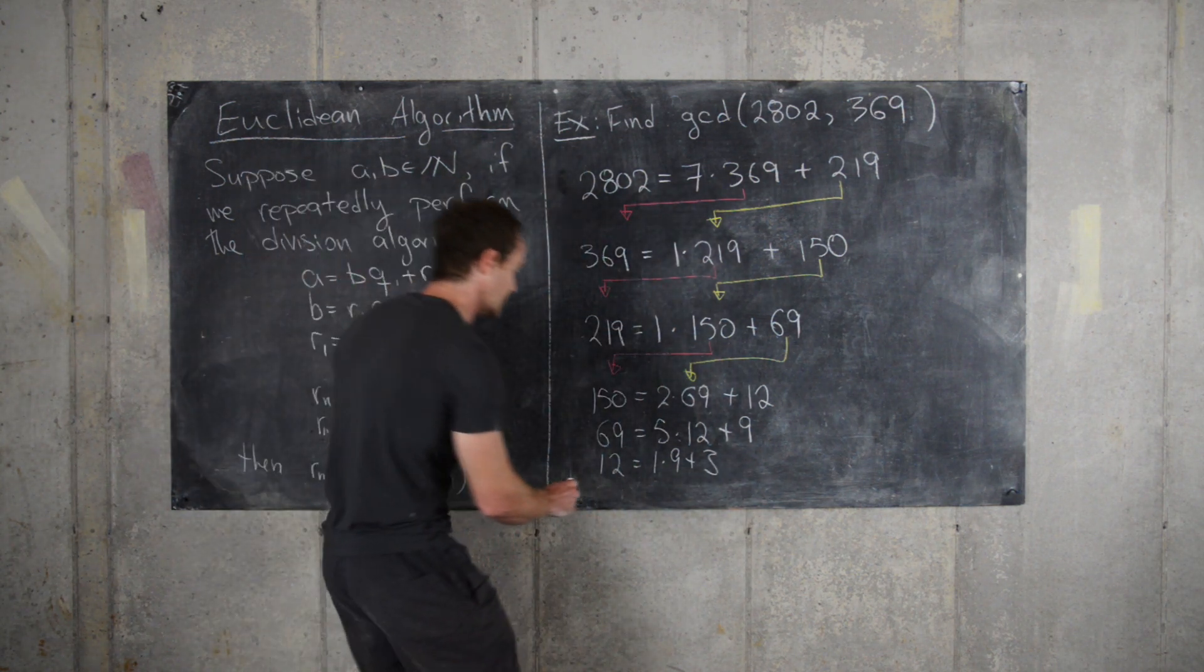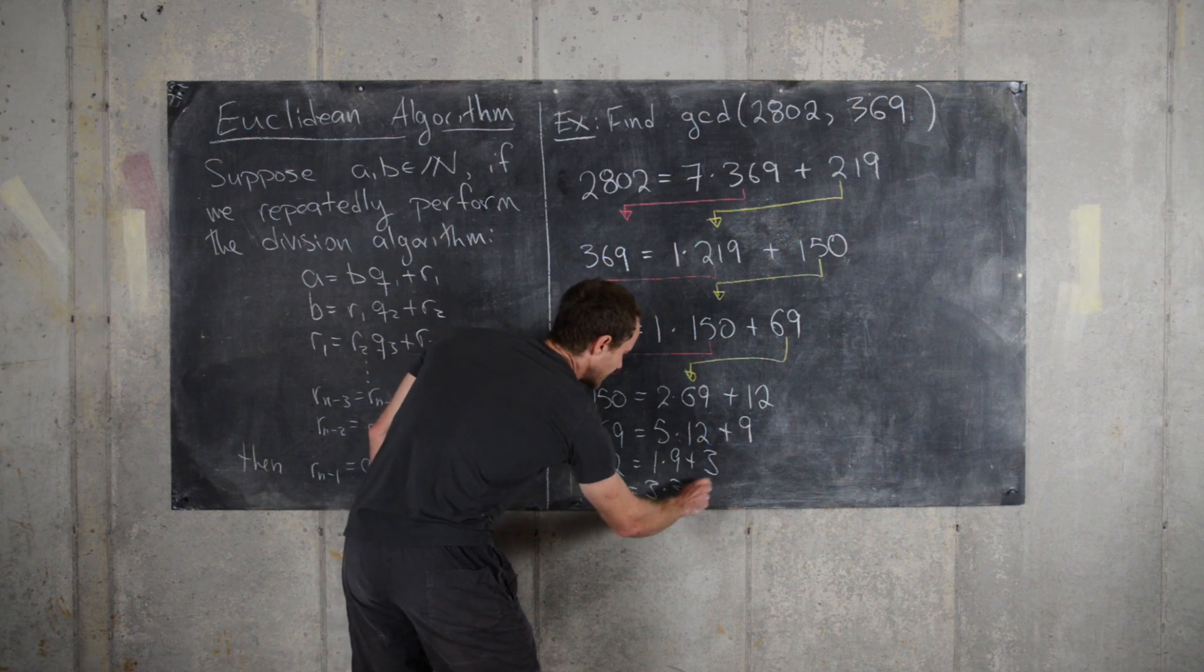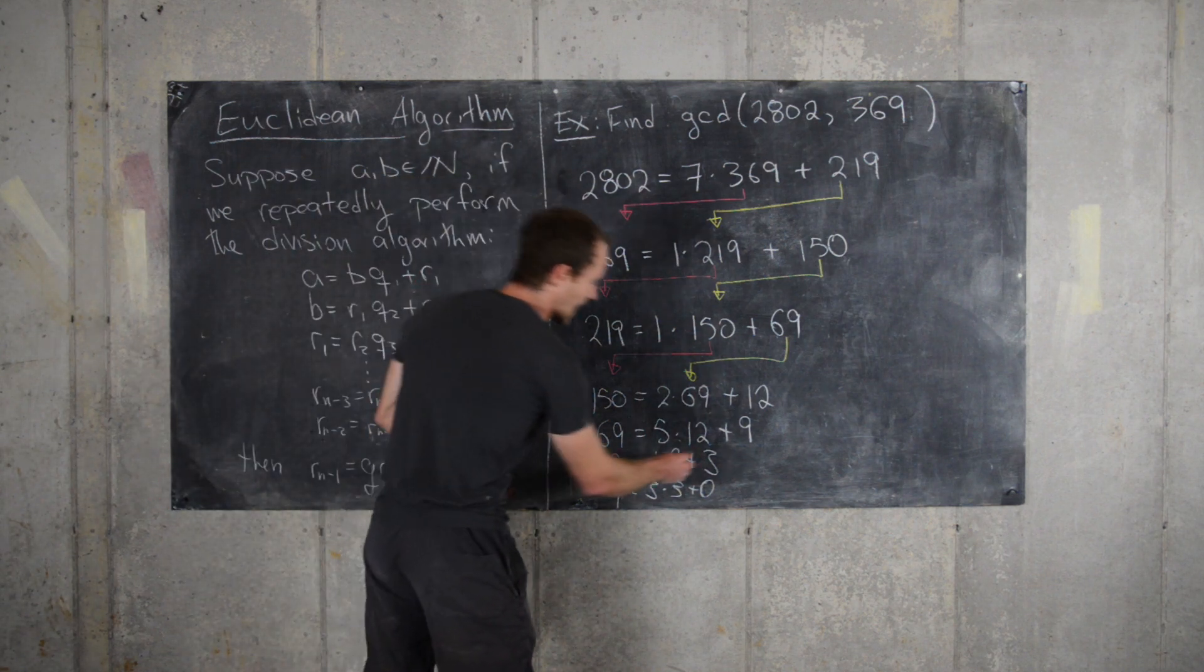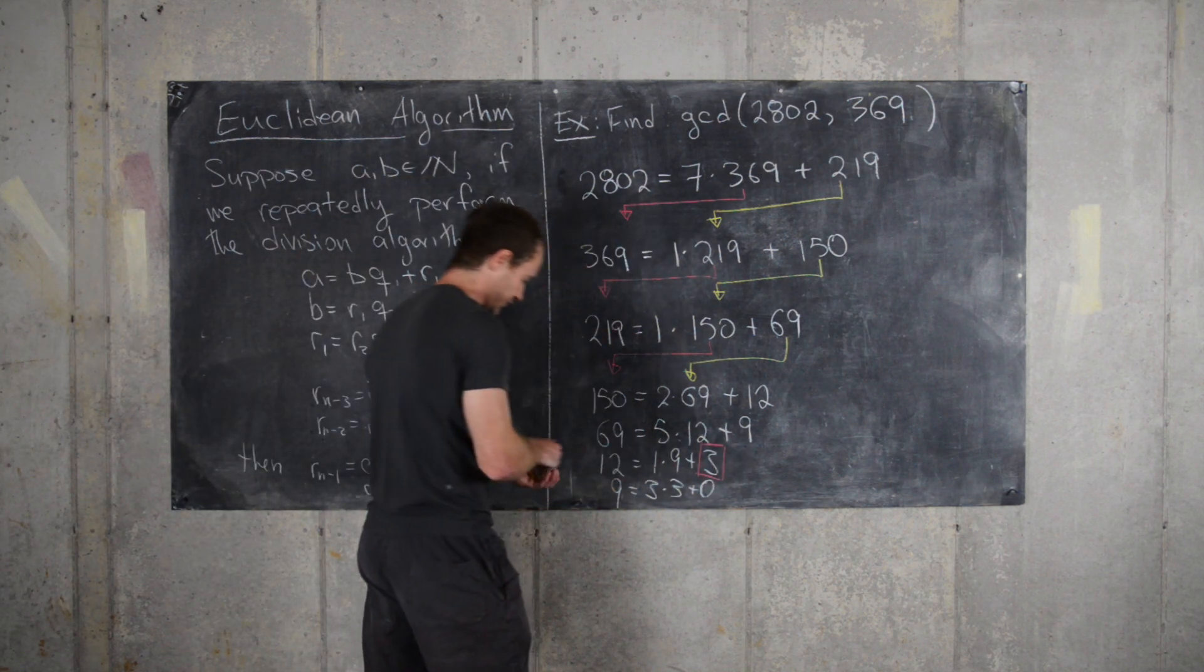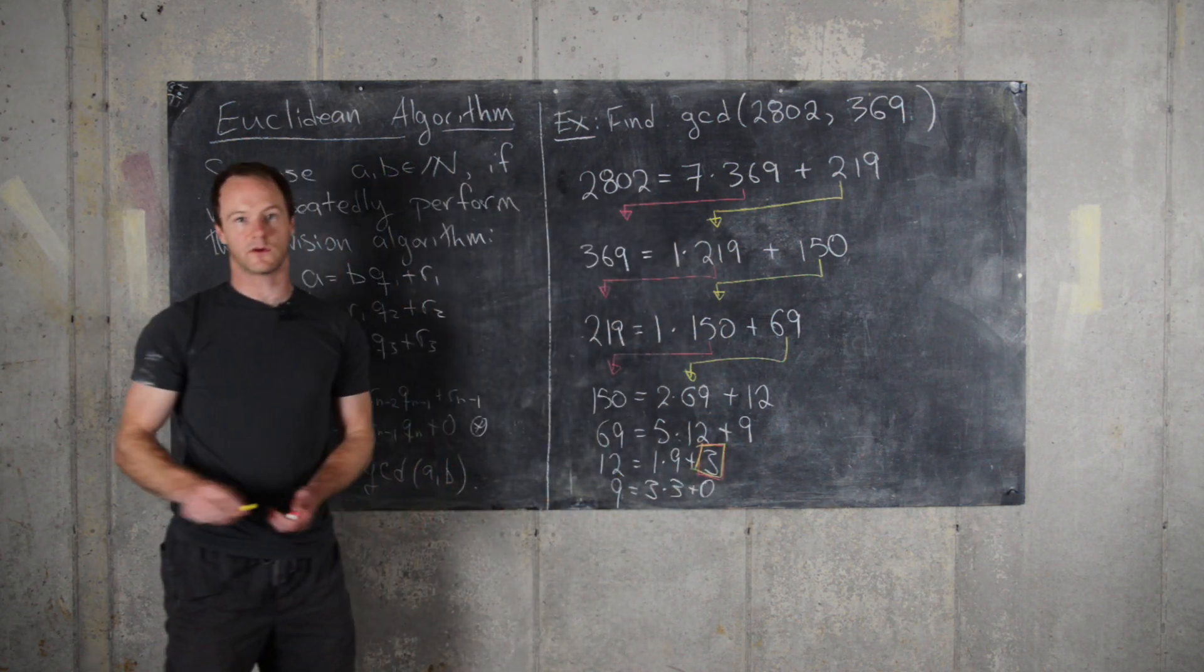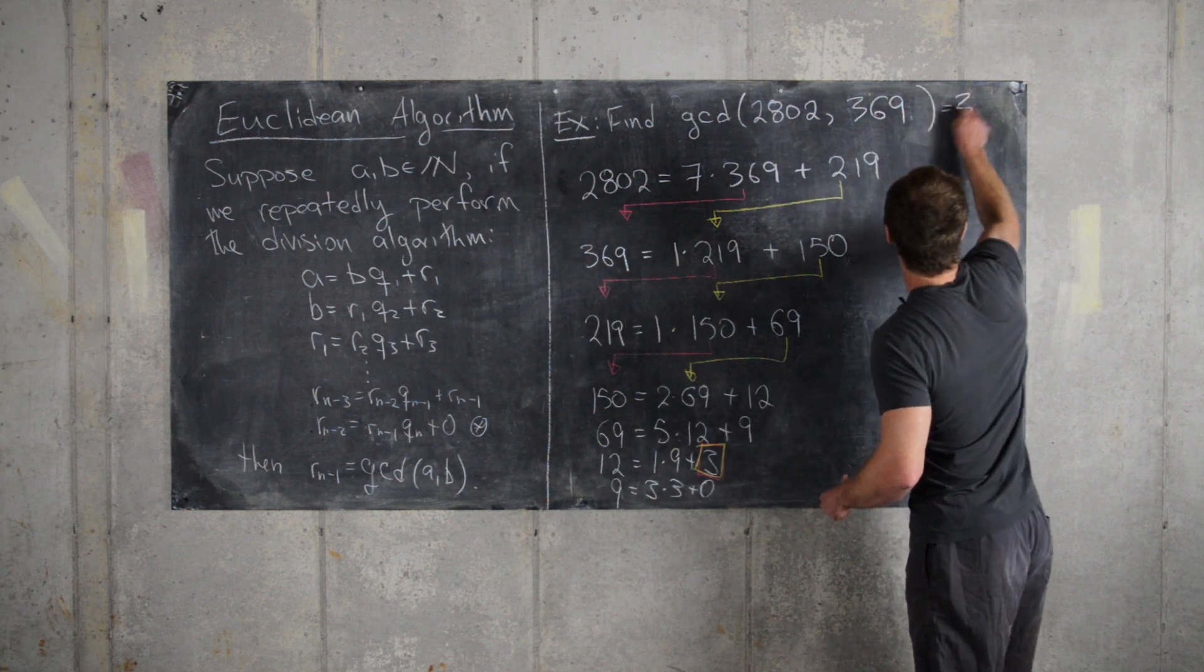And finally, 9 equals 3 times 3 plus 0. So we've got 0 as our remainder. So here we have 3 as our last non-zero remainder, which tells us that the GCD of these two numbers is 3.